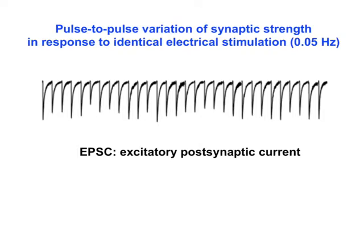One of the most notable features of synapse physiology is the wide pulse-to-pulse variation in response to identical stimulation. A long-standing question for decades is how does this variability arise. Many studies have been focused on the structural and stochastic properties of the molecular events underlying the variability of synaptic transmission from neuron to neuron or from synapse to synapse.